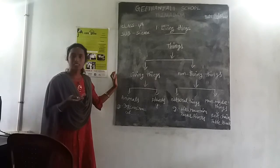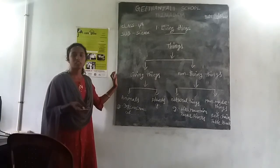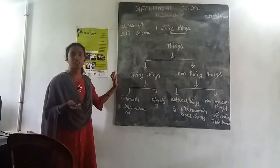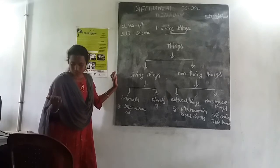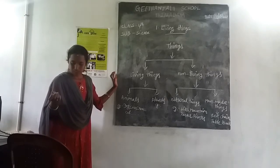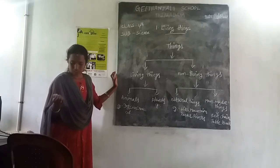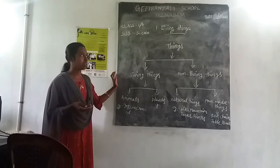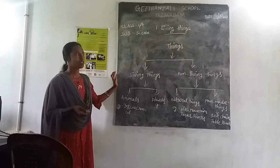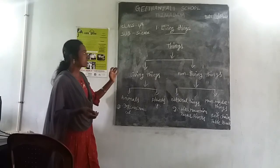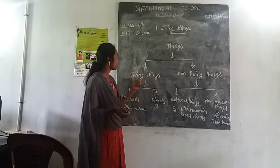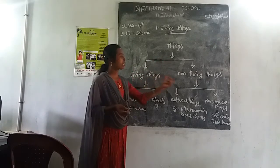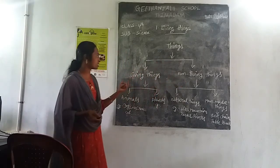Are they all the same? No, they are not the same. They are different. Some have life and some have no life. So, things are divided into two types: living things and non-living things.